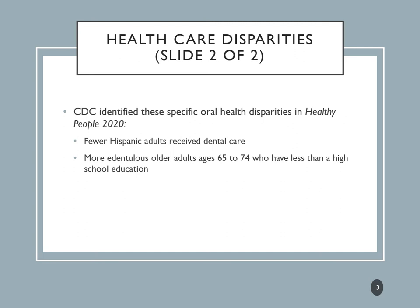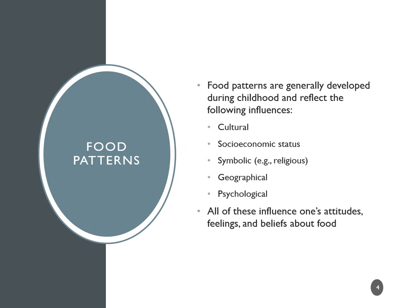Continuing with Healthy People 2020 findings: fewer Hispanic adults will receive or seek dental care, and more edentulous older adults between ages 65 to 74 with less than a high school education will face oral health disparities. These are demographic markers indicating higher risk — not certainties for every individual in those groups.